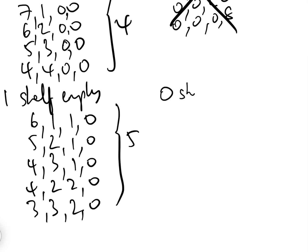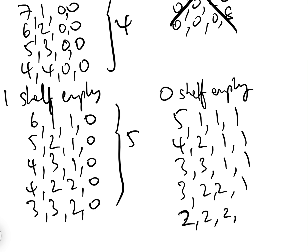And finally, let's have a look if we have zero shelves empty. Well, then we would only have 5, 1, 1, 1, then 4, 2, 1, 1, then 3, 3, 1, 1, then 3, 2, 2, 1, or 2, 2, 2, 2, which is another five.